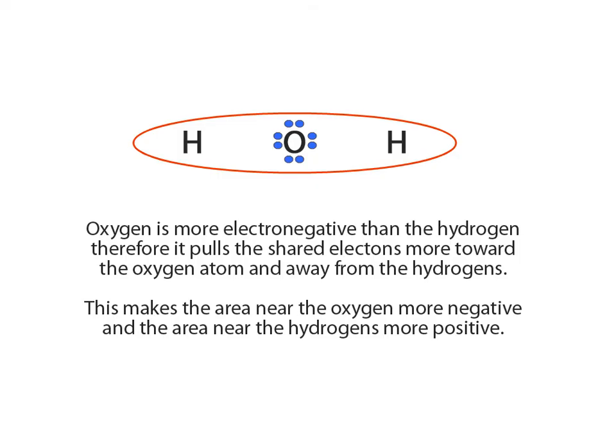When atoms share electrons to become stable, there is often an unequal sharing of electrons, such as the case with oxygen and hydrogen. Because oxygen has a much stronger electronegativity than hydrogen does, the oxygen atom tends to pull the shared negatively charged electrons away from the hydrogen atom and closer to the oxygen nucleus.